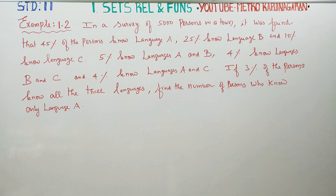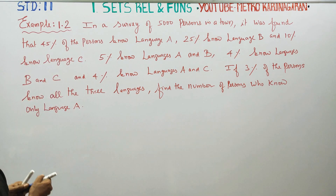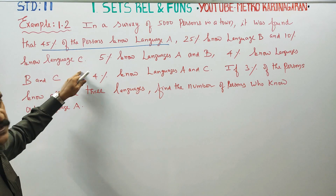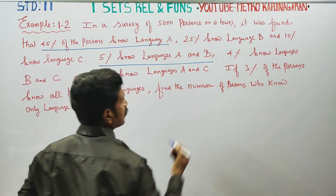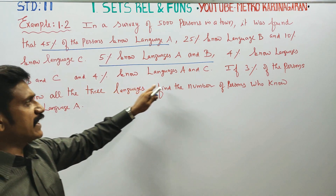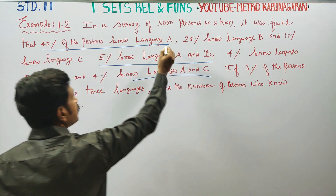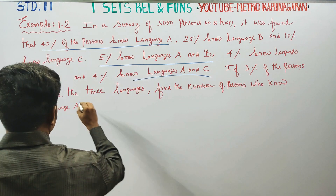Dear Learn Standard Students, in Example 1.2, in a survey of 5000 persons in a town, it was found that 45% of the persons know language A, 25% language B, 10% language C, 5% know languages A and B, 4% know languages B and C, and 4% know languages A and C. If 3 persons know all 3 languages,